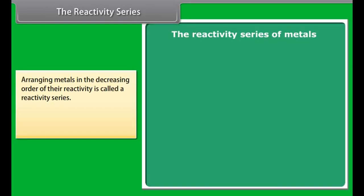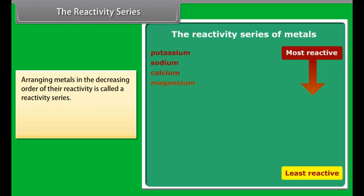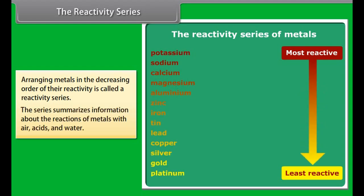The reactivity series. Metals being arranged in the decreasing order of their reactivity is called a reactivity series. It is used to summarize information about the reactions of metals with air, acids and water.